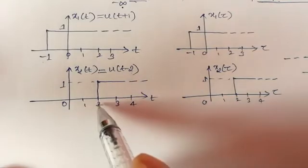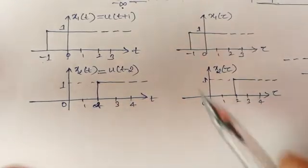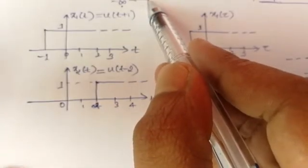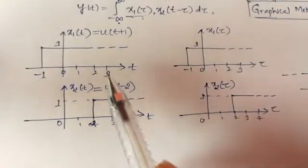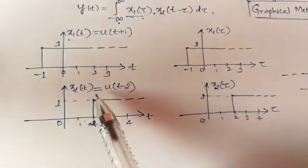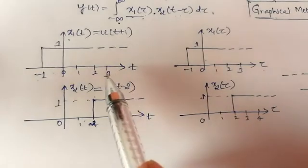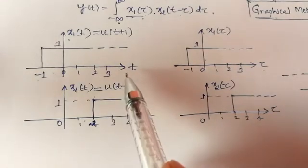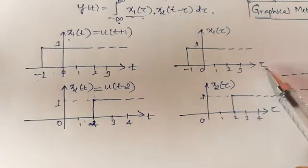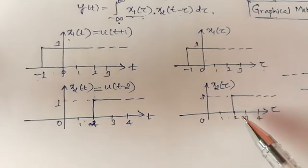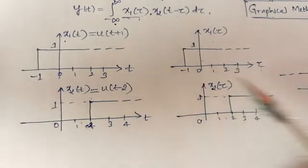In the convolution equation the index is represented as τ. Because of that, I am going to re-sketch these two signals x1(t) and x2(t) using index τ. There is no change in the signal — the only change is that we replace the index t with τ. Everything remains the same: x1(τ) and x2(τ) are sketched identically.